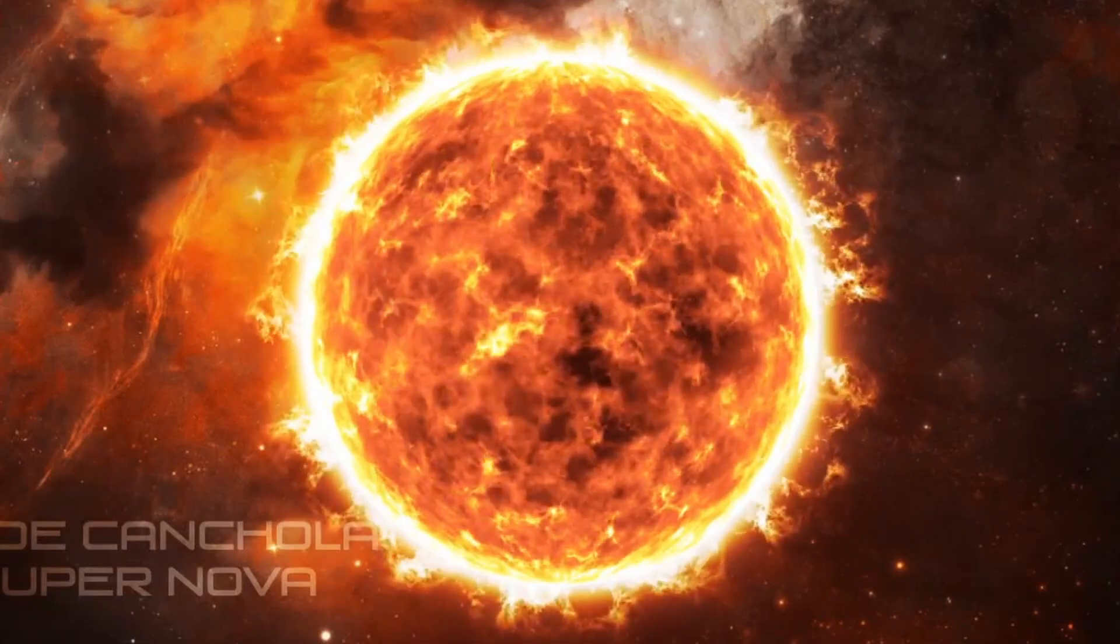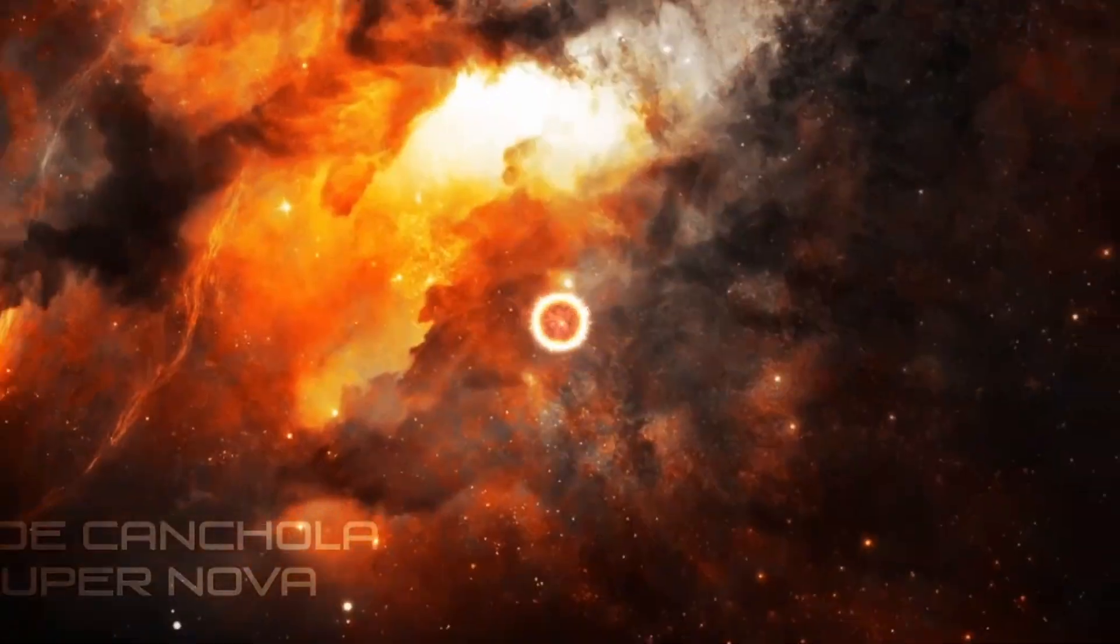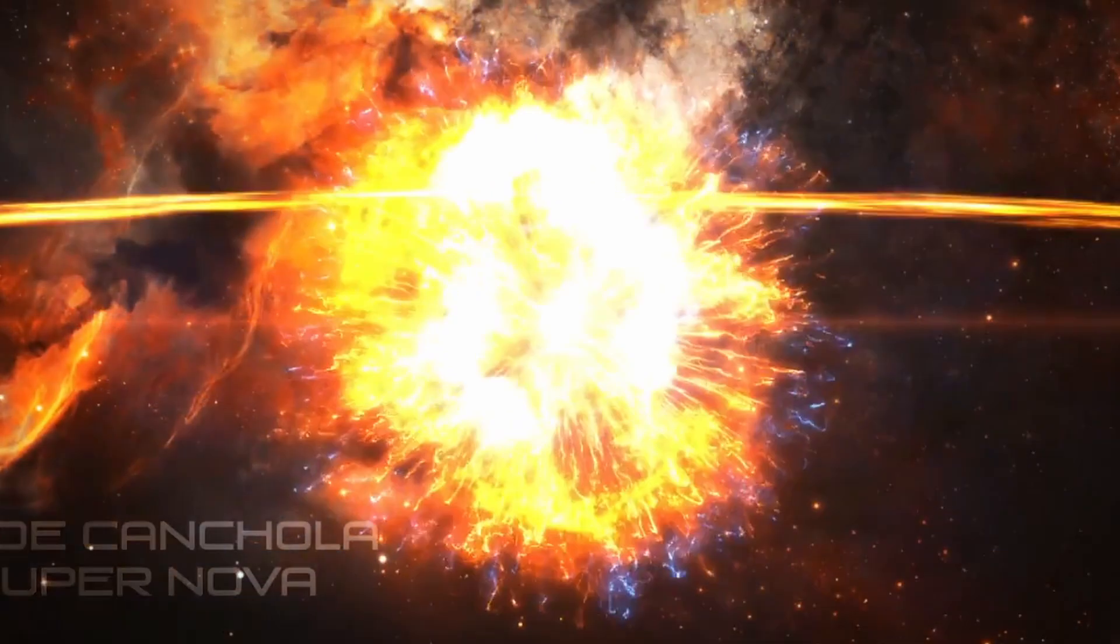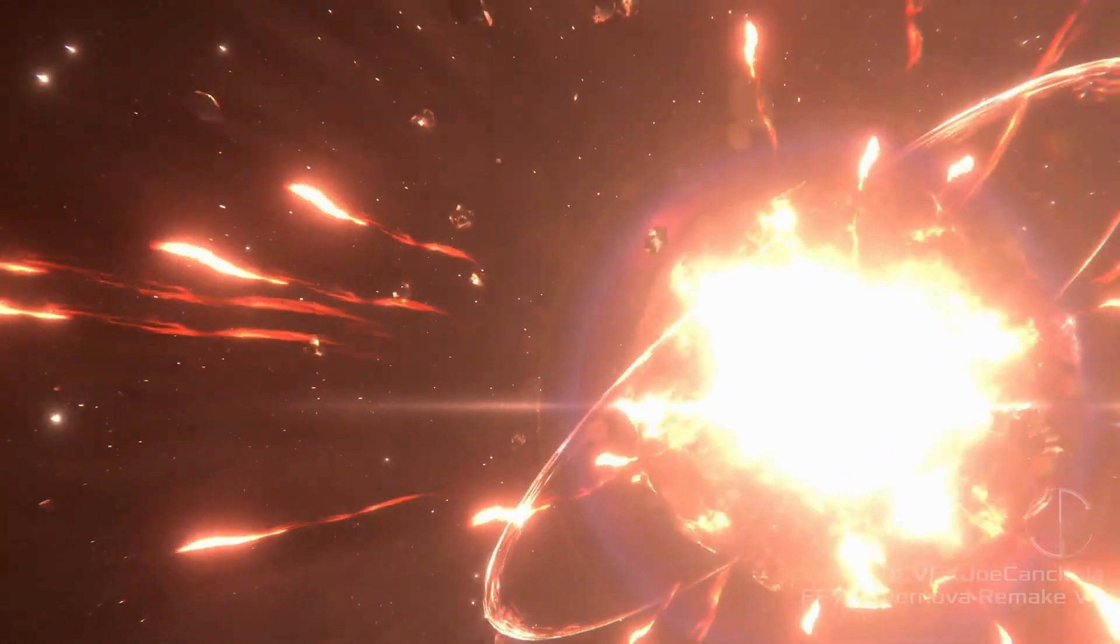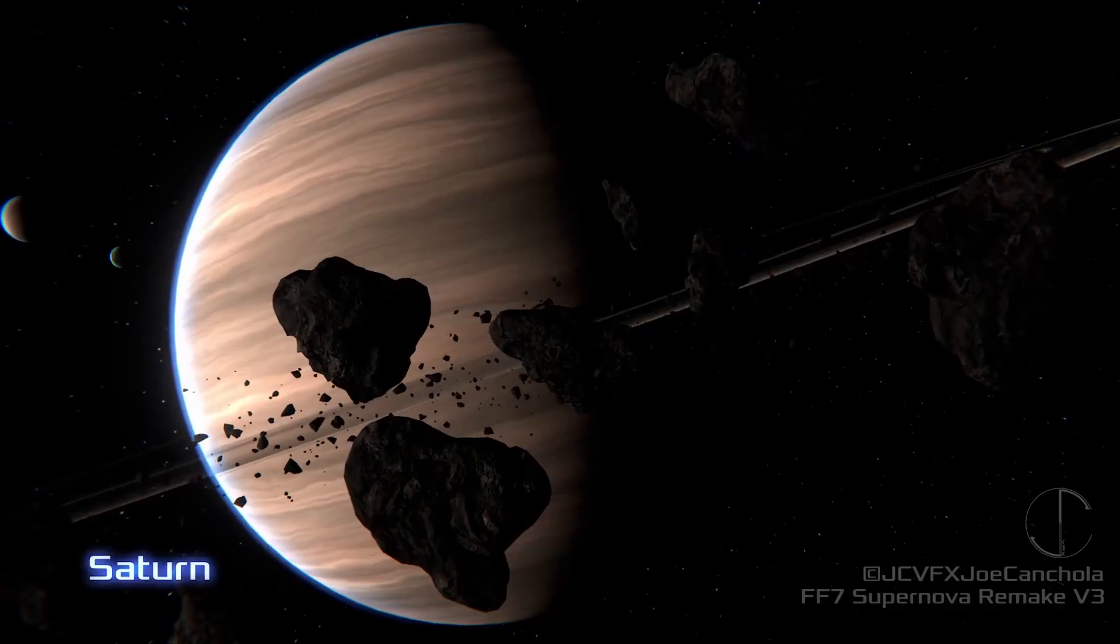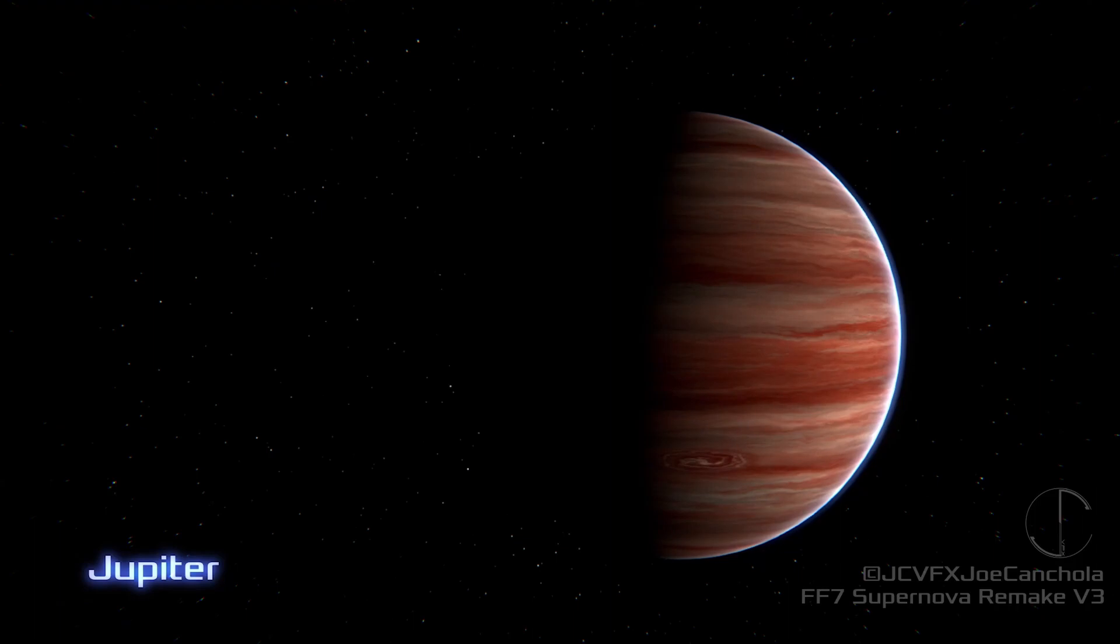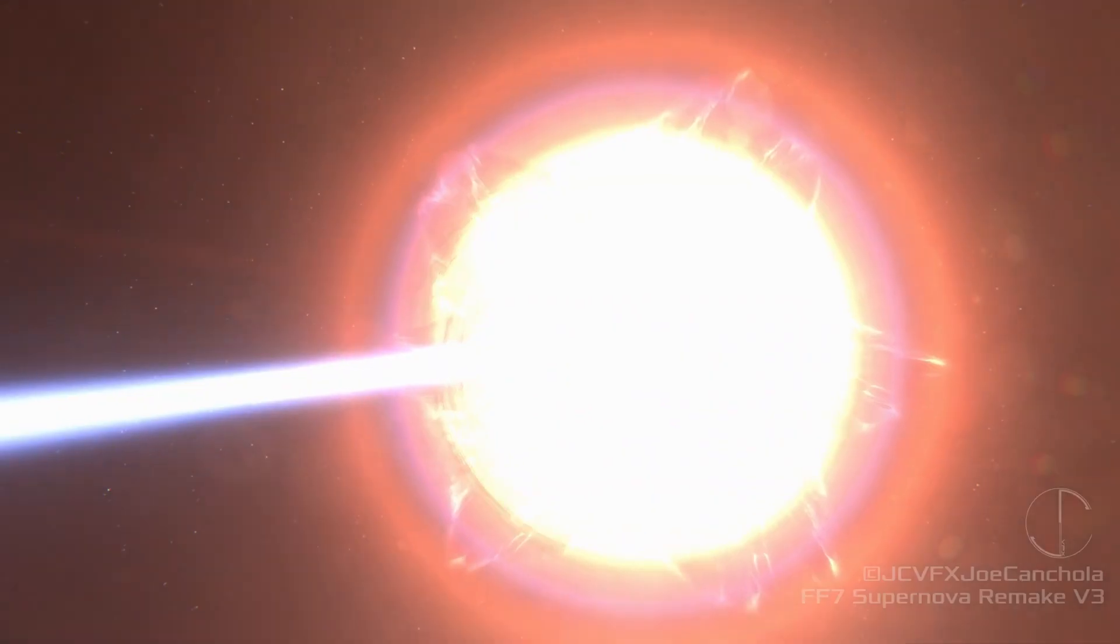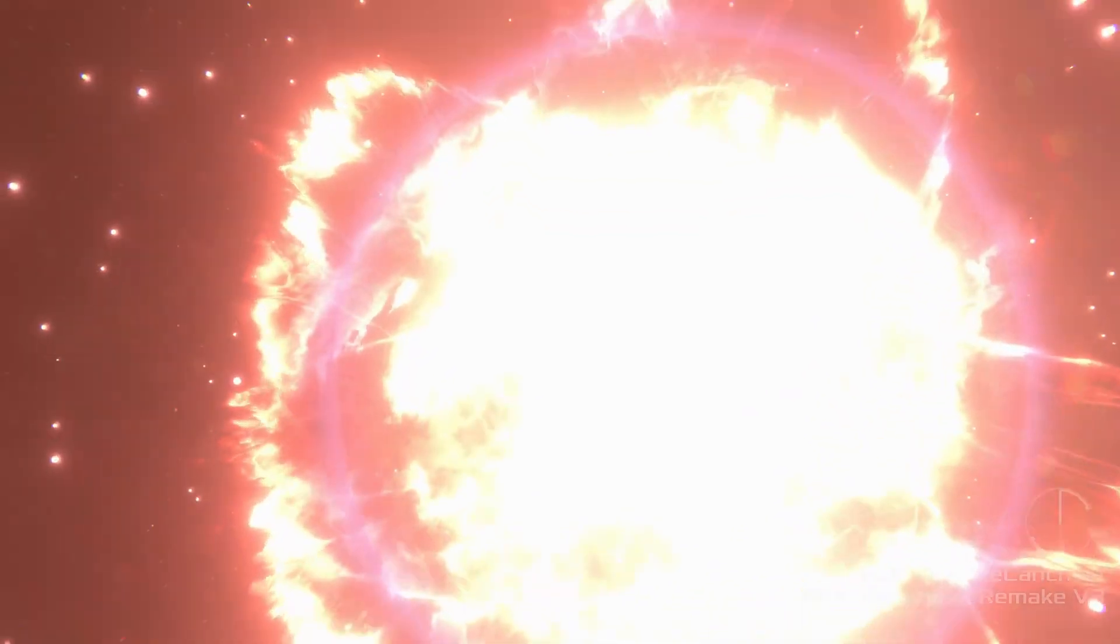But what will happen? Can we survive the gigantic supernova explosion? If Betelgeuse were near Earth, it would create huge damage to the solar system, not only Earth. The Earth's atmosphere would be destroyed by the energetic gamma waves produced by the Betelgeuse supernova.